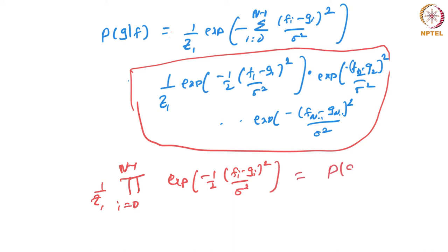The fundamental assumption here is that the probabilities of the individual pixels are independent of each other and they all have the same variance sigma squared. With that assumption, this summation in the exponent simplification follows.